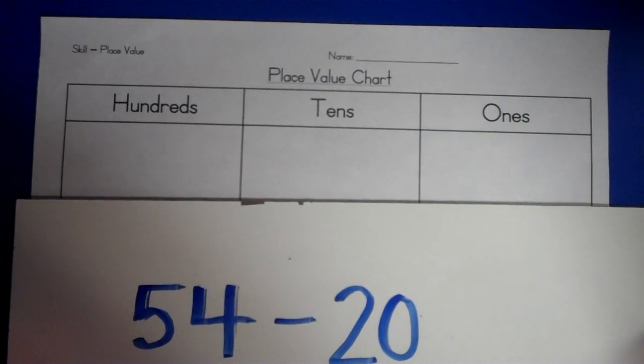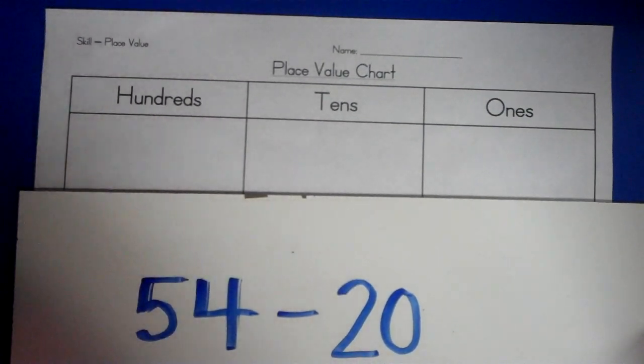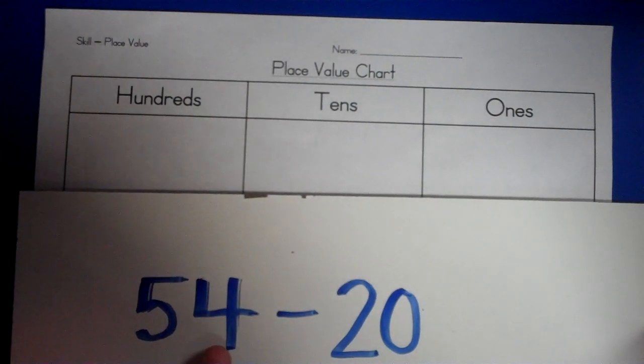54 minus 20. Now we talked about place value before, and in this 54 we have four ones and five tens, or five tens and four ones.